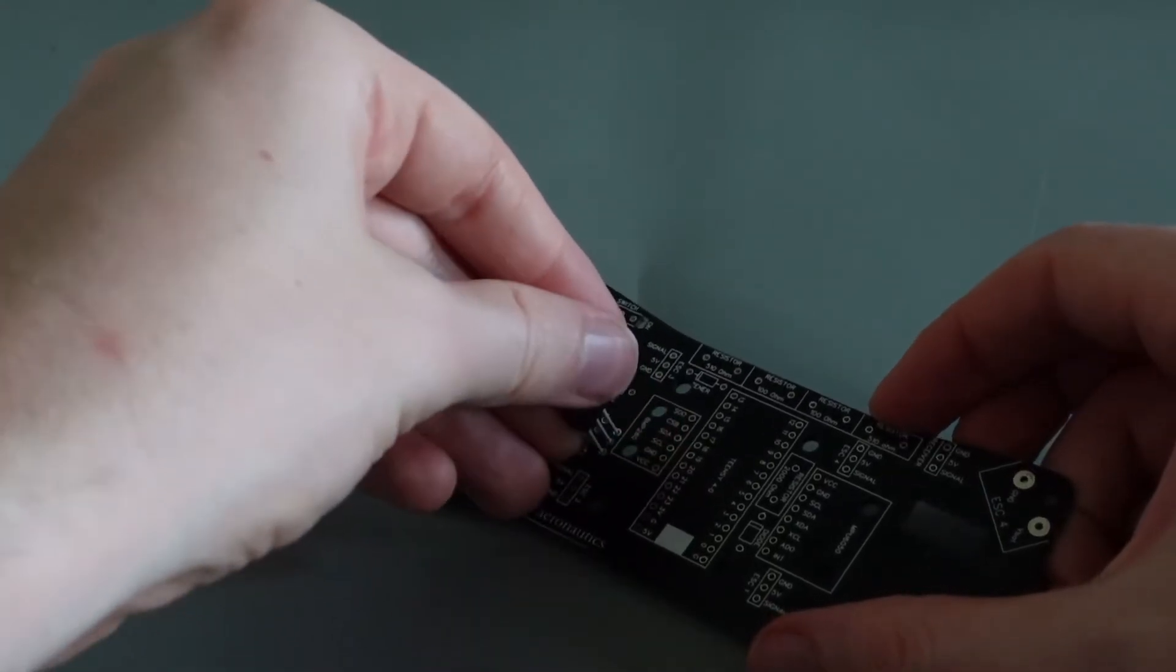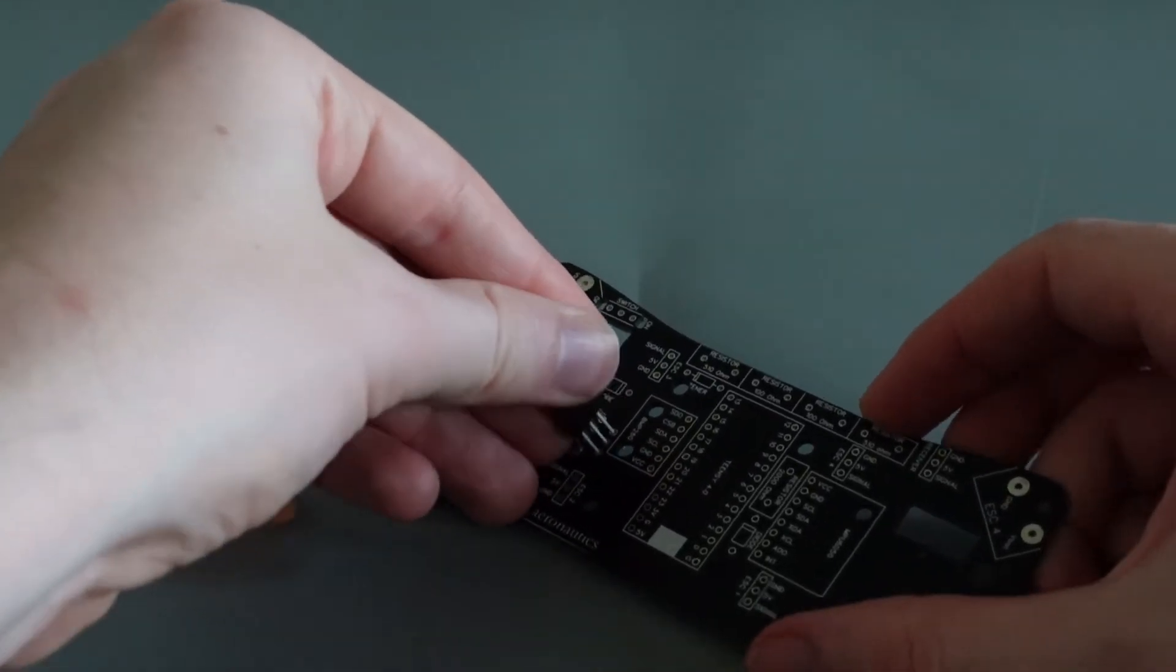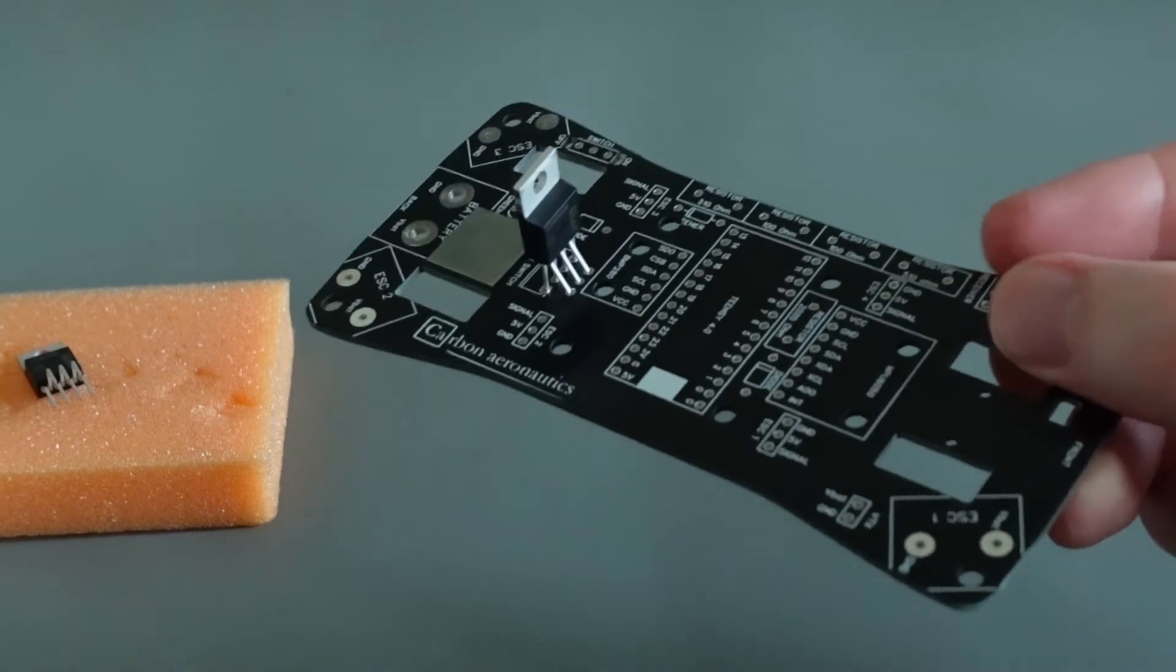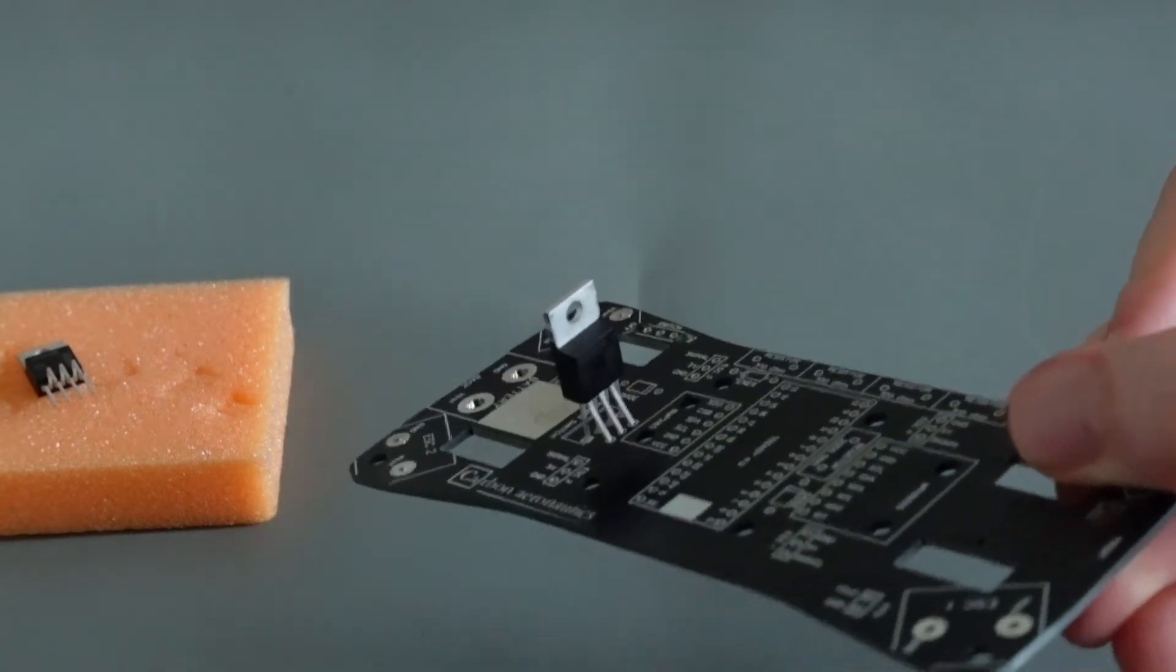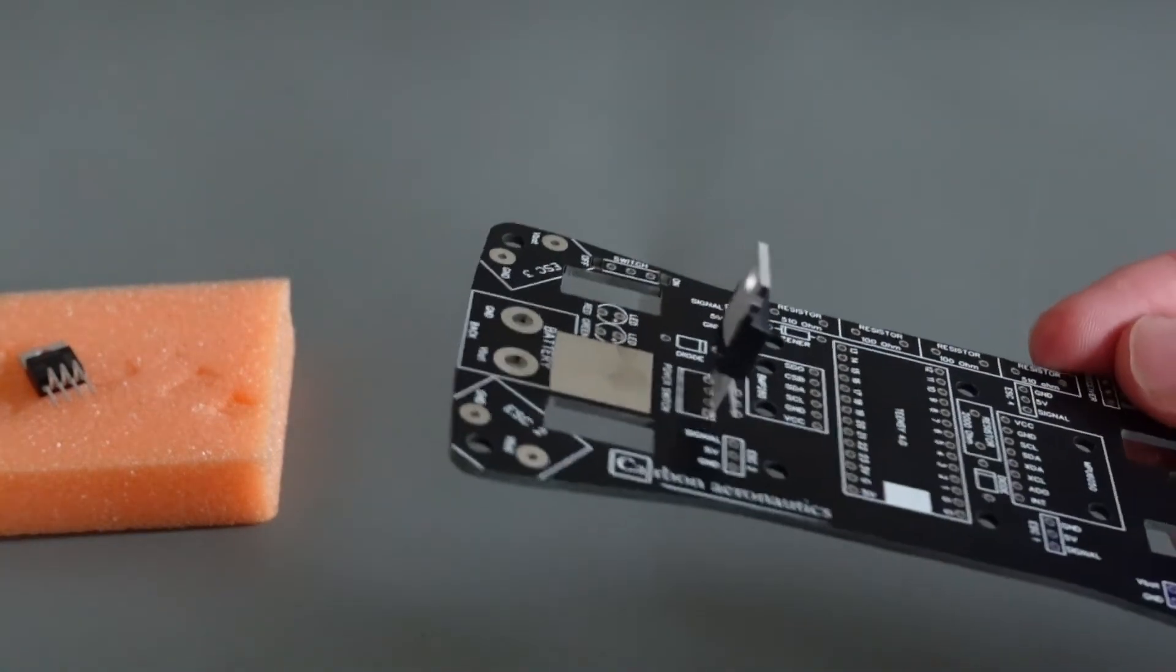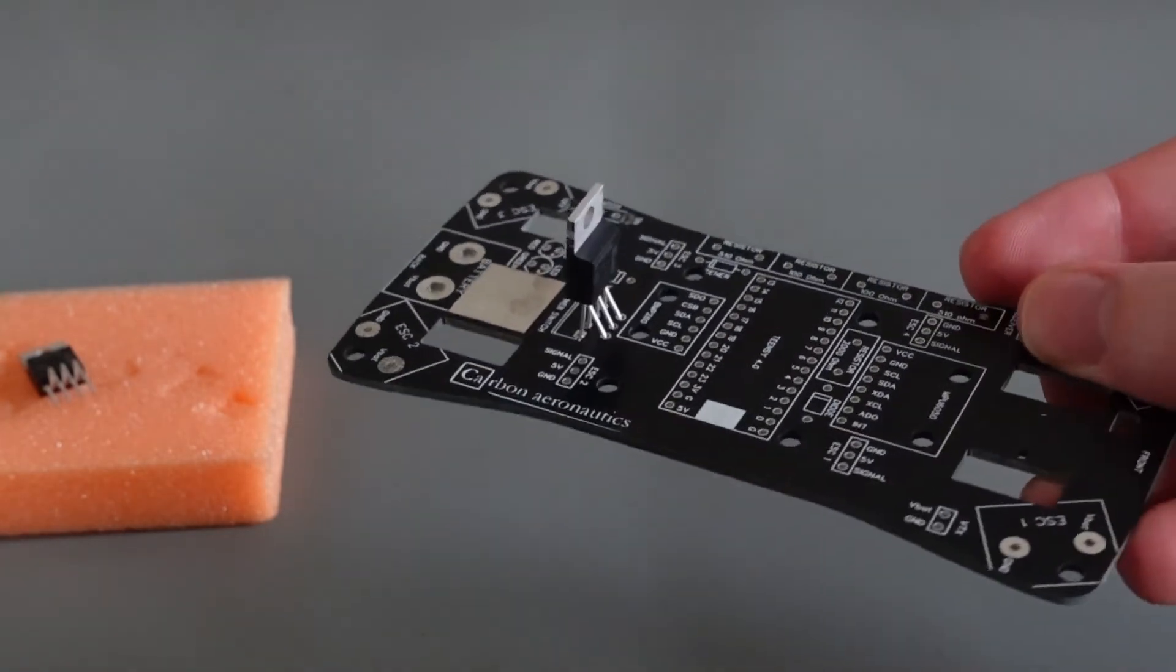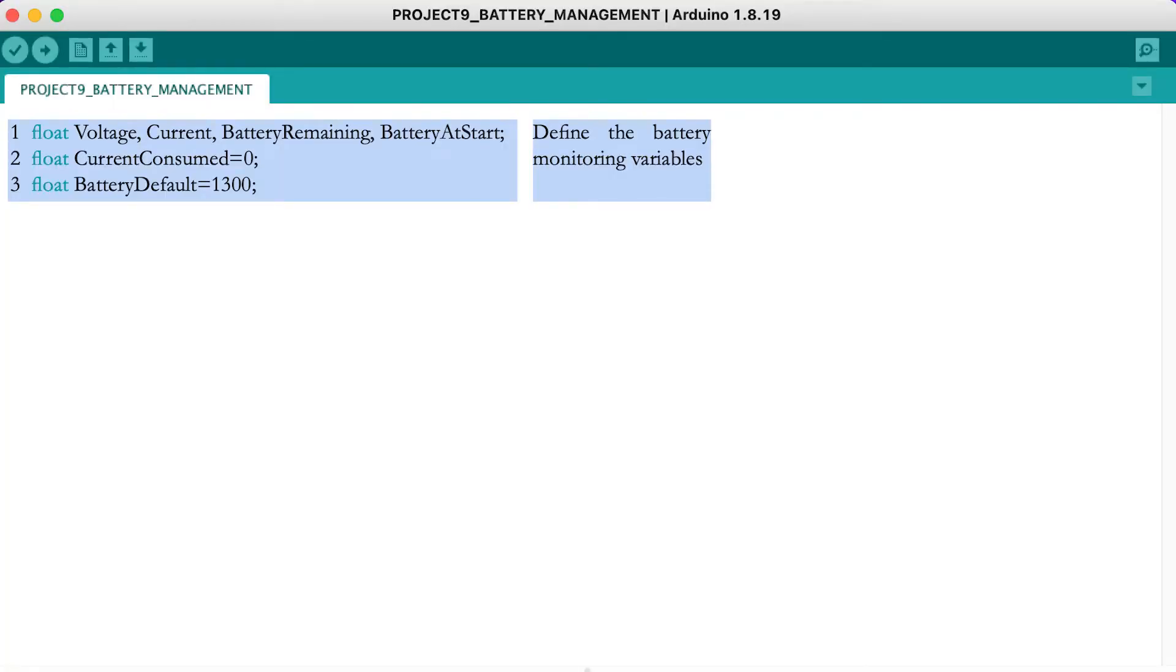Unfortunately, you cannot test the power switches on the breadboard because they require soldering. Therefore, we will only discuss the parts of the code that will be used later for the flight controller. First, declare the variables necessary for accurately monitoring the battery lifetime.